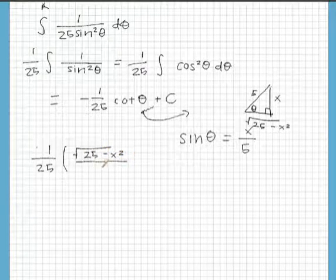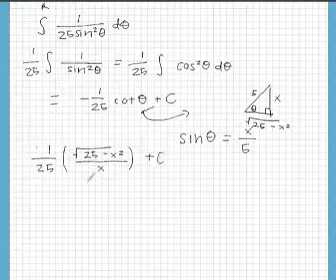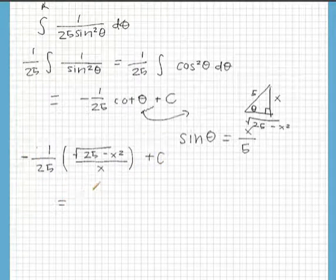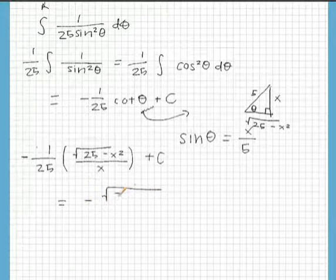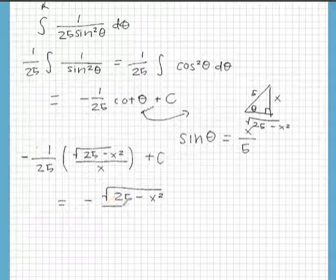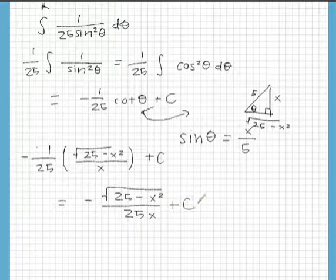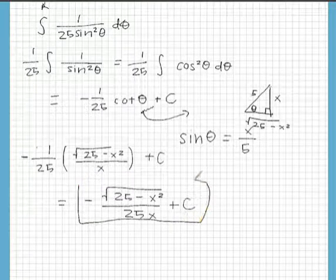And then just to simplify it we can make it negative radical 25 minus x squared over 25x plus C and that is our final answer.